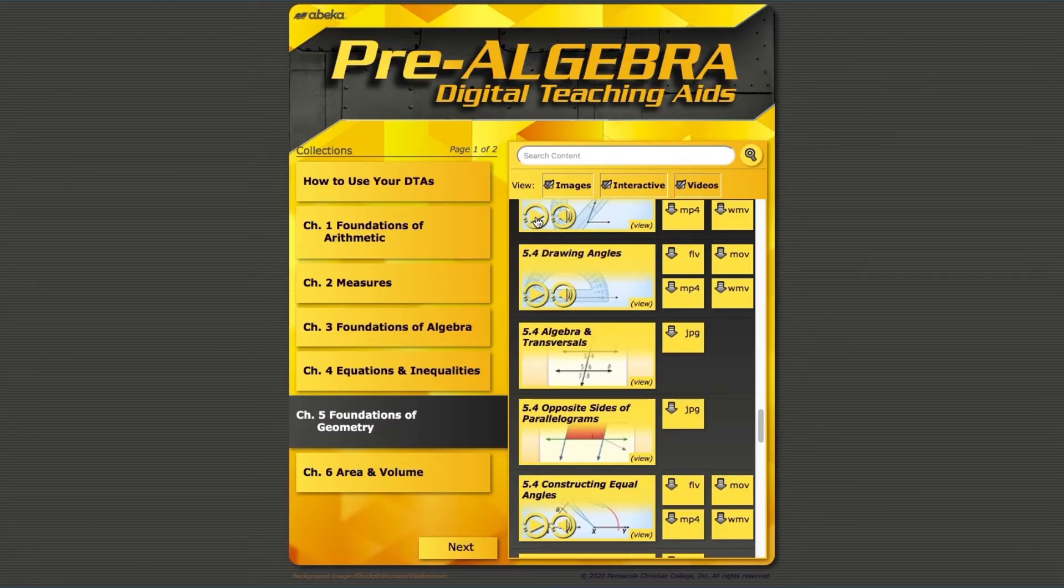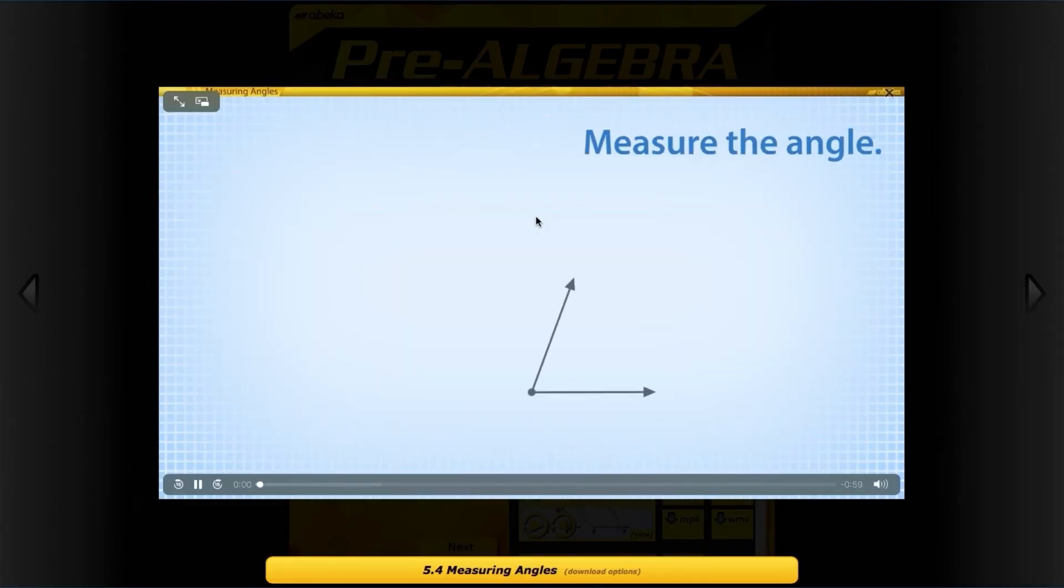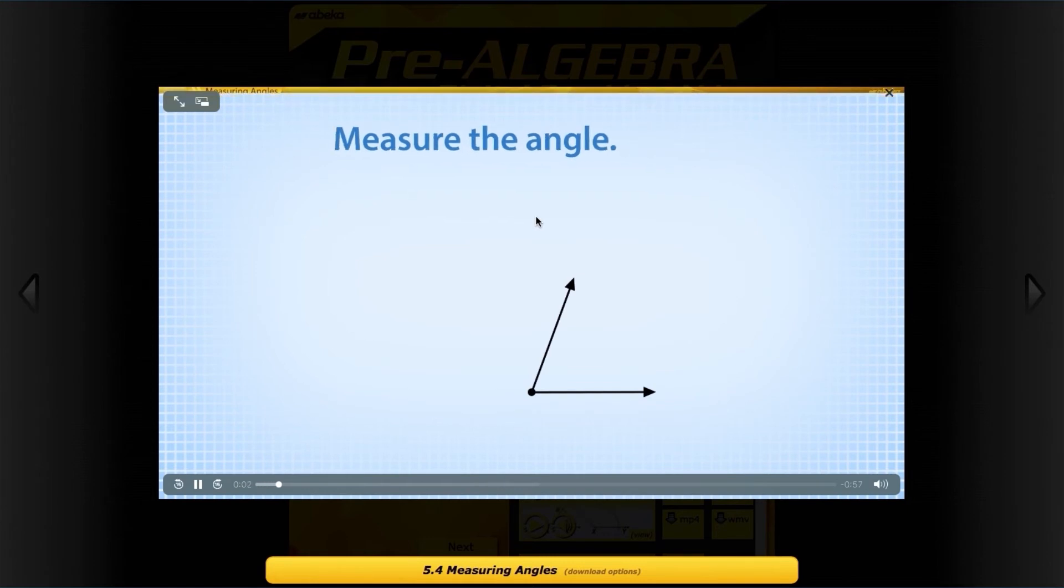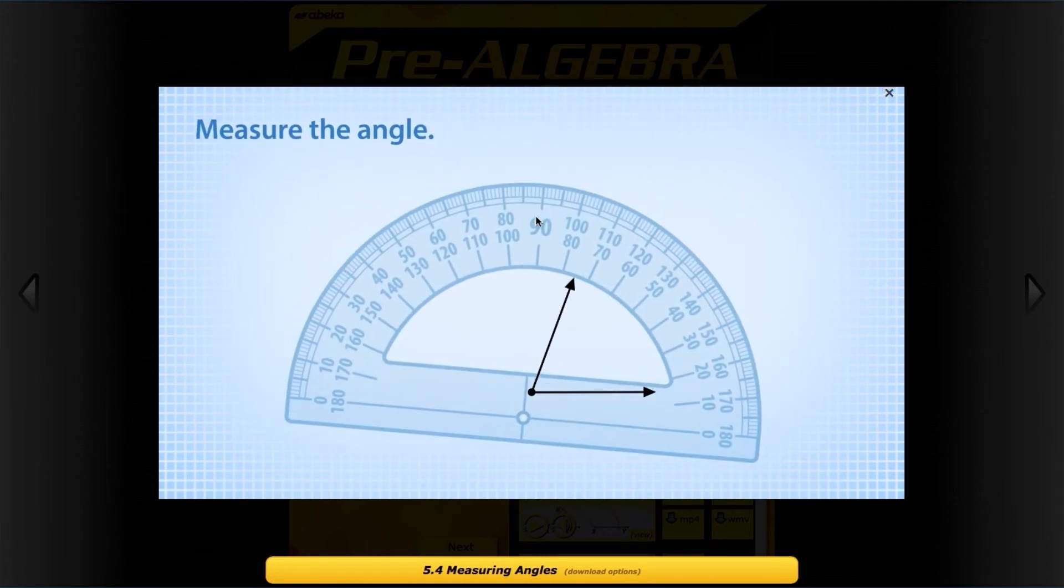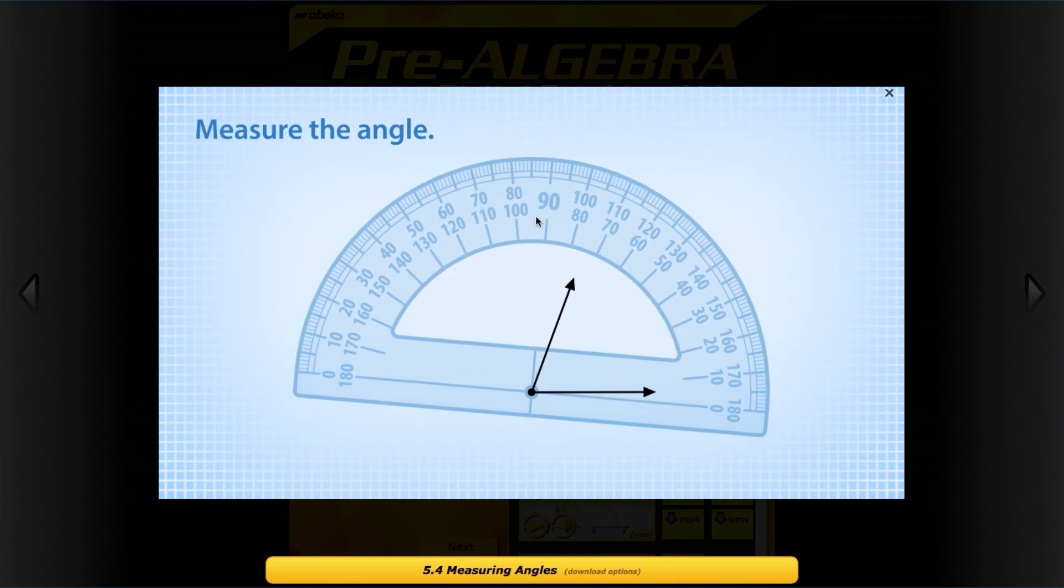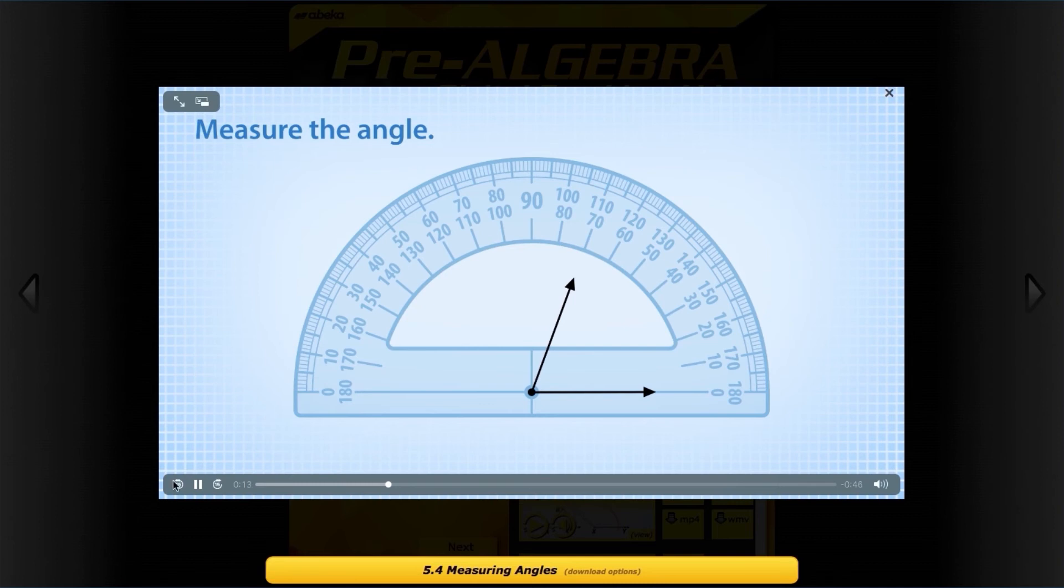DTA videos include audio narration. For example: 'To measure an angle with your protractor, first place the vertex marker of the protractor at the vertex of the angle.' This audio narration provides a step-by-step process for each concept without taking away your